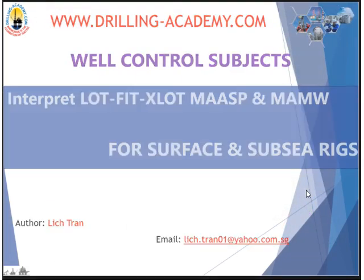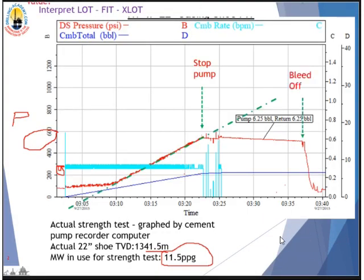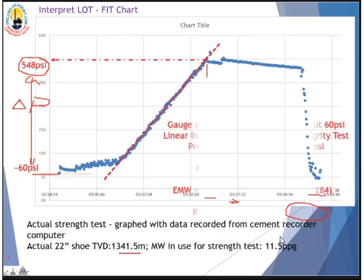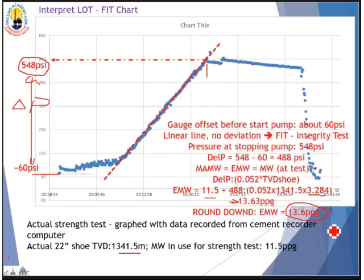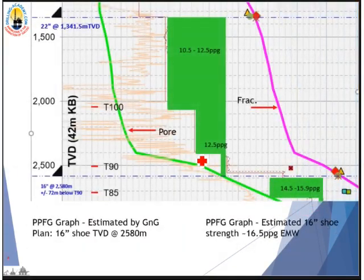The first theoretical graph called for 13.3 ppg shoe strength. Now we have worked out the actual result is 13.6 ppg — a significant difference. Between theory and practice there are always some differences. That is how to construct and interpret the FIT graph.